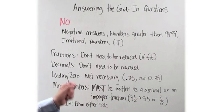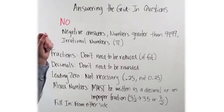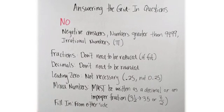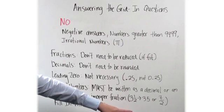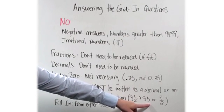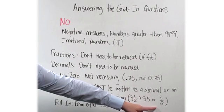If you grid in 3, 1, dash, 2, the computer will read it as 31 over 2 and you'll be wrong. Instead, you have to grid in 3.5 or 7 over 2.